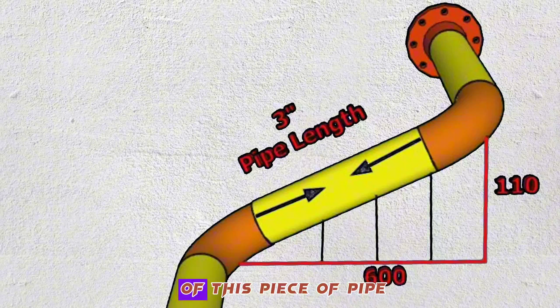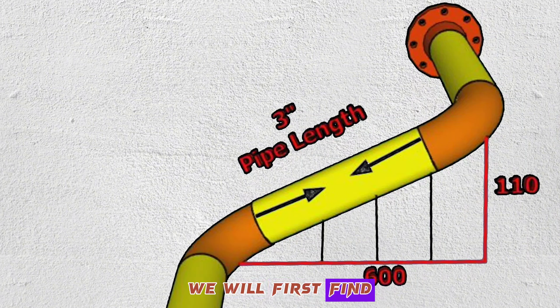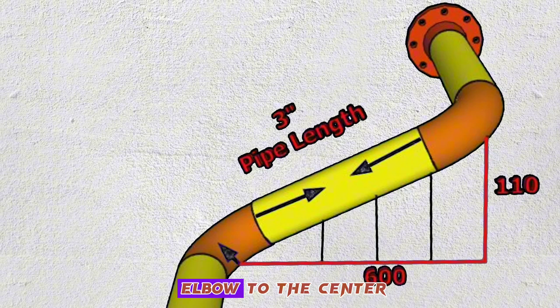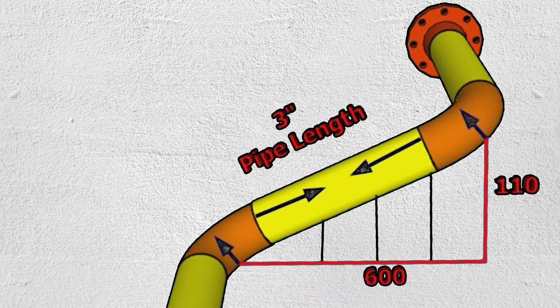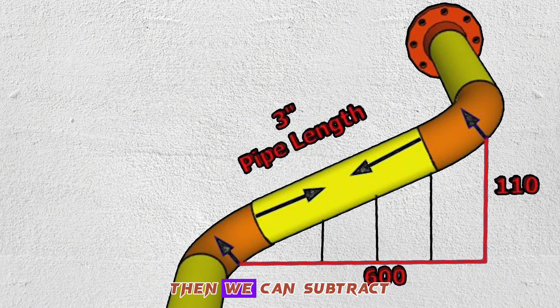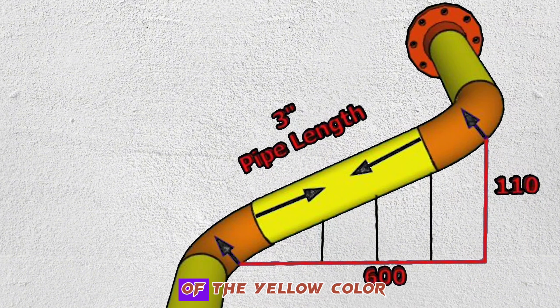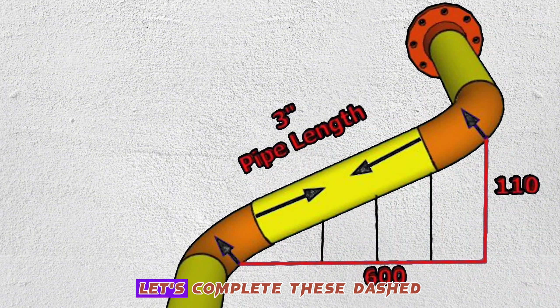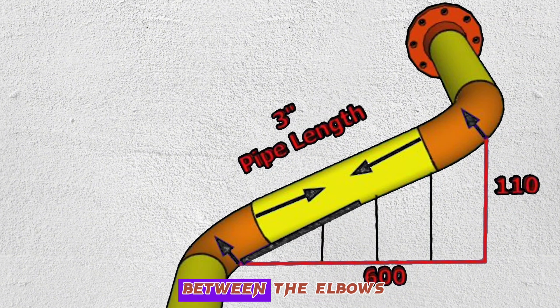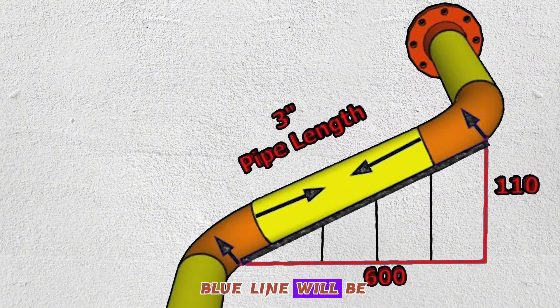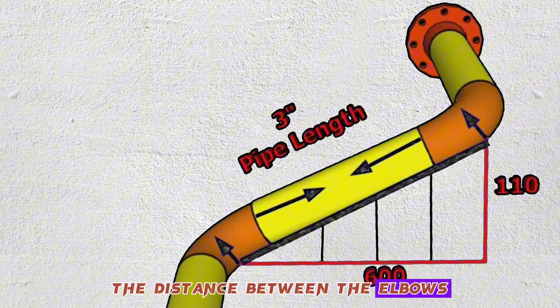To find the length of this piece of pipe, we will first find the distance from the center of this elbow to the center of this elbow. Then we can subtract the lengths of these two elbows from this measurement and find the length of the yellow color pipe piece. Let's complete these dashed lines into a right triangle to find the distance between the elbows. The length of this blue line will be equal to the distance between the elbows.